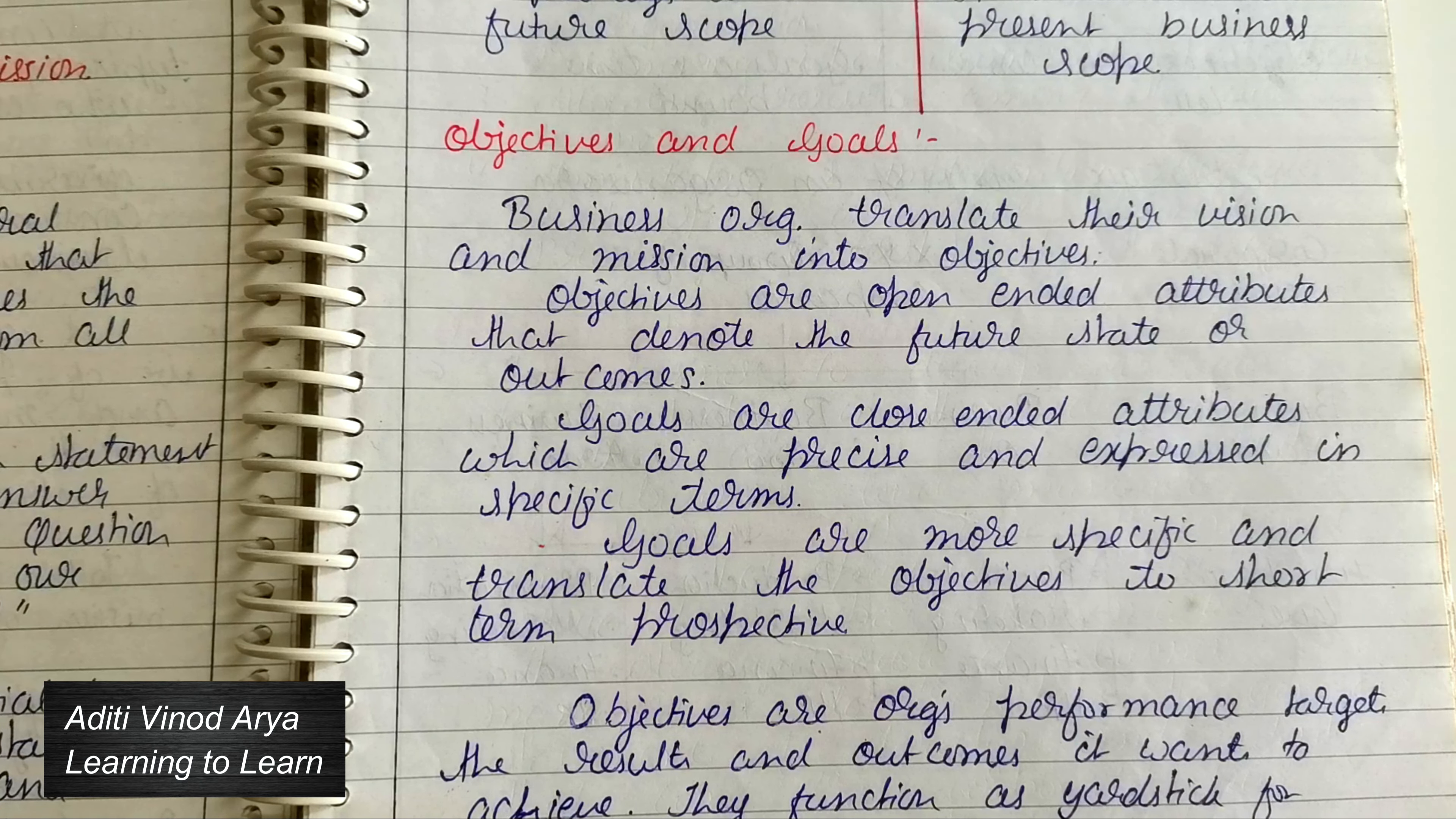Whereas objectives are not that straightforward. Goals are more specific and translate the objectives to short-term perspective. Now about objectives - objectives are an organization's performance targets, the results and outcomes it wants to achieve. Objectives function as a yardstick to measure your business performance.